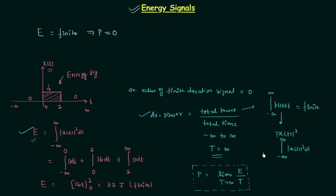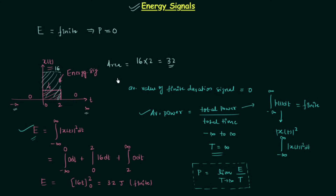There is one more way to understand why the power is equal to zero. Consider the signal and plot |x(t)|²: where the signal was 4, you will now have 16. The total area of |x(t)|² from minus infinity to infinity is 16 multiplied by 2 which equals 32. When you distribute 32 equally from minus infinity to infinity, the average is zero, because 32 is a very small finite quantity spread over an infinite interval.